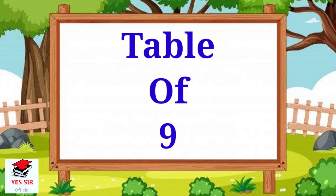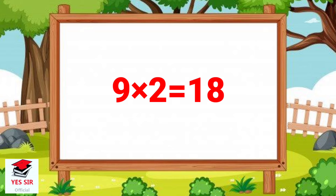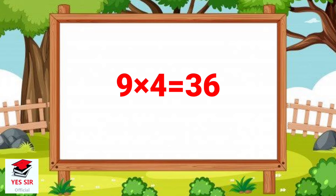Table of 9. 9 and 1 is equal to 9. 9 and 2 is equal to 18. 9 and 3 is equal to 27. 9 and 4 is equal to 36. 9 and 5 is equal to 45.